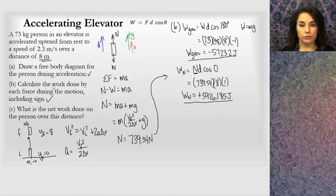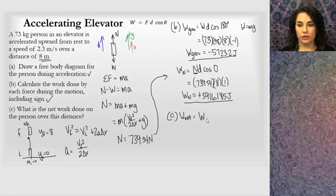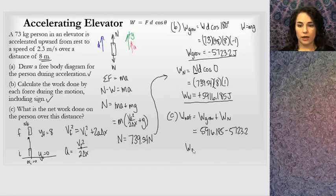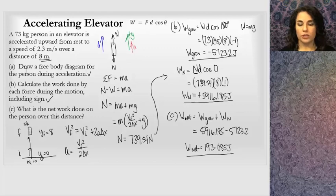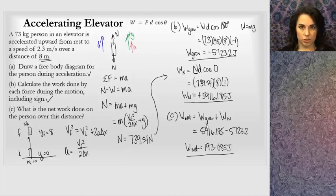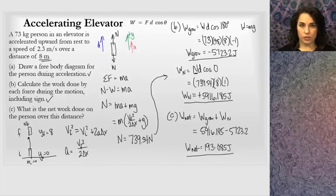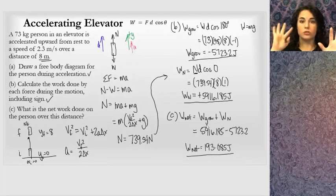There are no other forces, so the net work done on the person equals the work done by gravity plus the work done by the normal force: 5916.185 minus 5723.2 equals approximately 193.1 joules. That's the net work. This lesson was intended to teach you how to find work done by a force and how to relate work done by individual forces to the net work on the system.